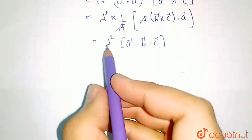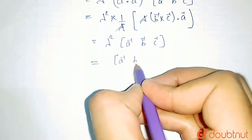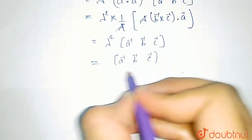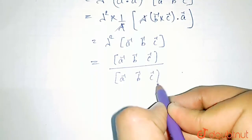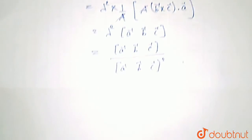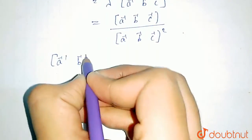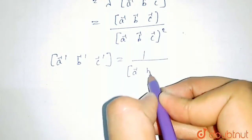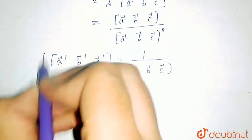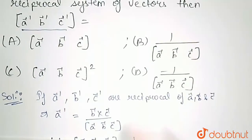Substituting the value of lambda here — lambda is 1 upon the scalar triple product of A, B and C — this bracket remains as it is, and substituting the value of lambda, we get in the denominator the scalar triple product of A, B and C whole squared. So the final value for the scalar triple product of A', B' and C' is equal to 1 upon the scalar triple product of A, B and C. This is the required answer. Hence the correct option is option B.